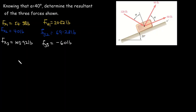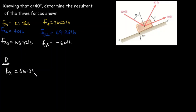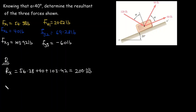Now we sum up all the components to get the components of the resultant force. For the x-component: Rx = 56.38 + 40 + 103.92 = 200.3 pounds.